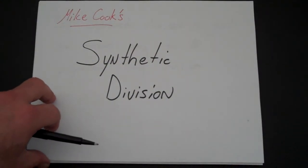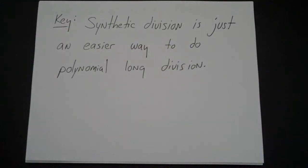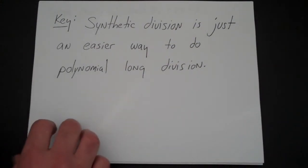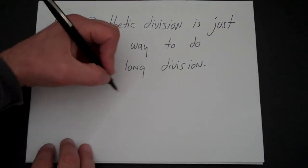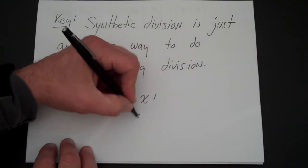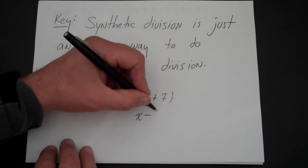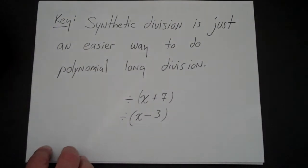Now let's look at synthetic division. Synthetic division can be thought of as the same thing as polynomial long division — it's just an easier method in some instances. We're only going to do synthetic division in this class when you're dividing by either x plus some number or x minus some number. For example, if you're dividing by x plus 7 or x minus 3, you would use synthetic division.